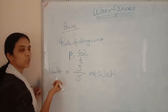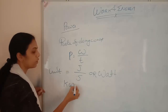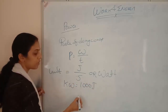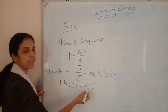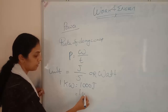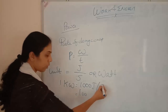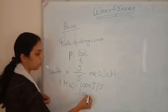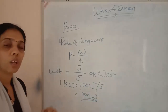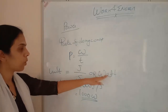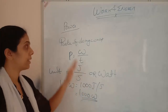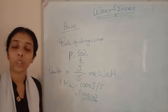Other units of power include kilowatt. One kilowatt equals one thousand joule per second, or equivalently one thousand watt. So thousand joule per second and thousand watt are the same. These are all units of power.